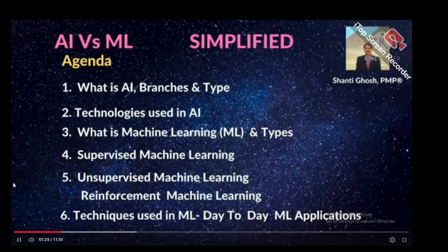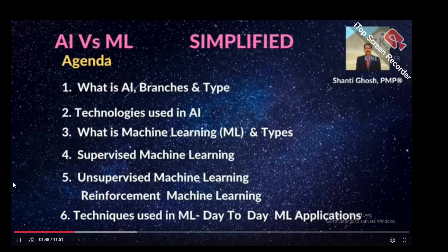Agenda: What is Artificial Intelligence, its branches and types, and technologies used in Artificial Intelligence. What is Machine Learning and its types — Supervised Machine Learning, Unsupervised Machine Learning, and Reinforcement Machine Learning. Different techniques used in Machine Learning, and examples from day-to-day Machine Learning applications.